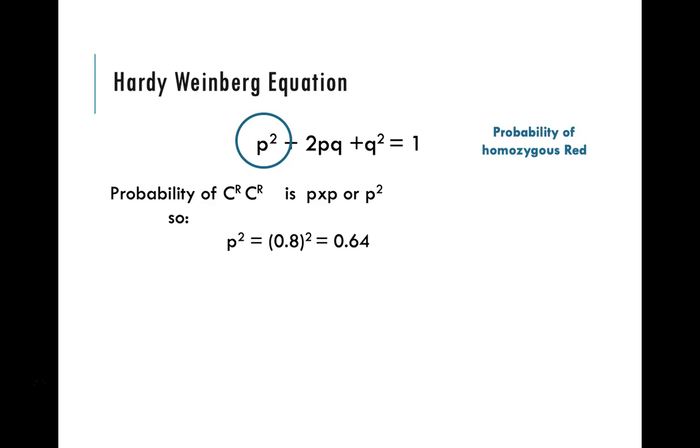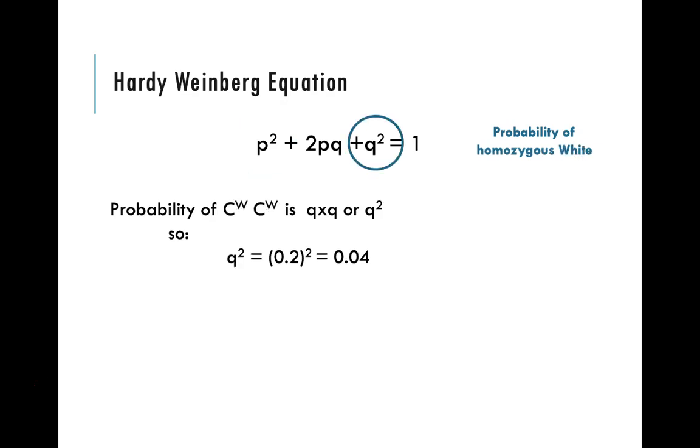It's really that simple. You use the part of the equation that you need to calculate the probability of being that genotype. The probability of our other homozygous individual, the probability of being homozygous for the white allele, is q squared. So we calculated q as 0.2, square that, we get 0.04. So q squared, or the probability of being homozygous for the white allele, is 0.04.